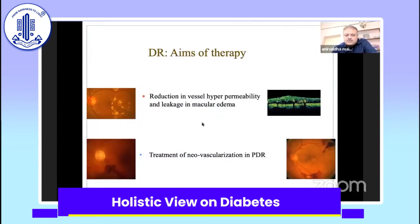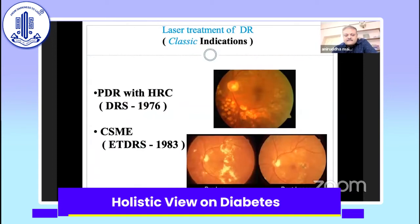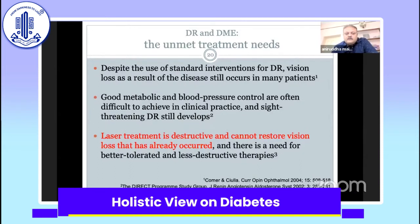The aims of therapy in diabetic retinopathy are two: reduction of vessel hyperpermeability and leakage in macular edema, and treatment of neovascularization in PDR. Classic indications include PDR with high-risk characteristics and CSME with extrafoveal leakage. There are other indications — especially NVI, or severe NPDR with high-risk factors like pregnancy, hypertension, renal failure, elevated lipids, a patient undergoing cataract surgery, a one-eyed patient, or a non-compliant patient unlikely to follow up. Laser treatment is destructive and cannot restore vision loss already occurred, so there was a need for better tolerated and less destructive therapy.